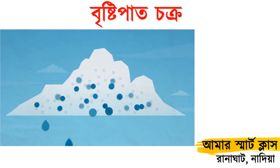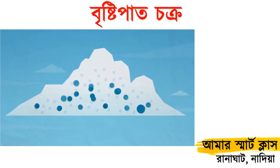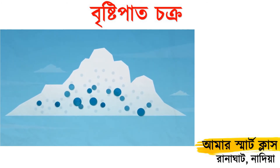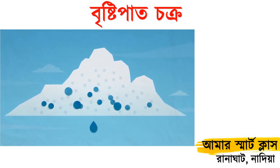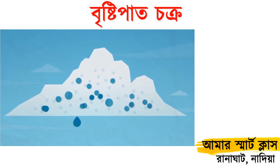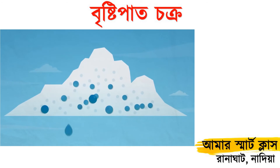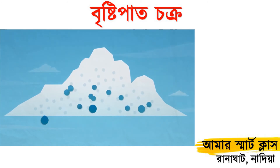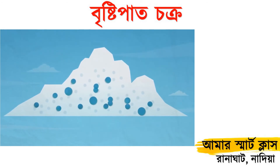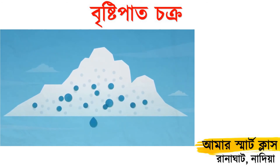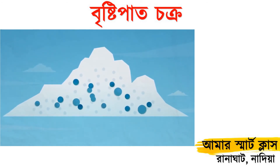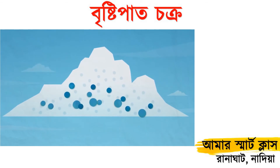They even grow as they bump into one another on their journey from the cloud to the ground. And every single raindrop that reaches the ground is made up of one million of the original tiny water droplets.